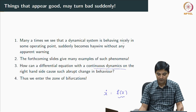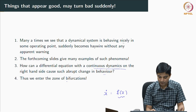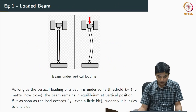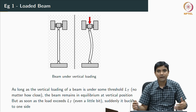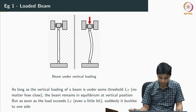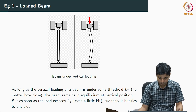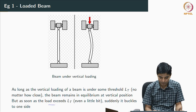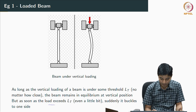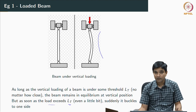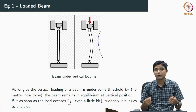This change in behavior is what we term bifurcations. One intuitive example is a beam under vertical loading: as the load increases, for normal load the beam behaves as it should, but if the load exceeds a certain value it buckles to one side — it could bend either way. We have not yet quantified or even looked at qualitatively why this really happens and what it means in terms of systems.